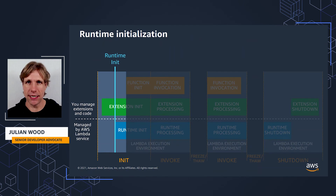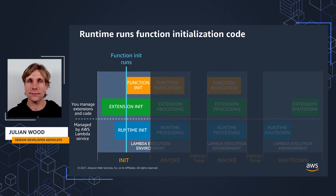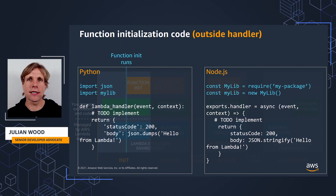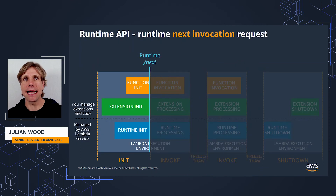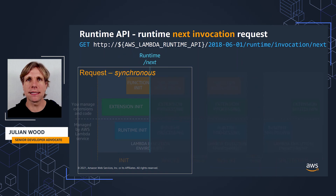The runtime then does its initialization tasks. It reads the environment variables to get details about the function and environment, including the directory and location of the handler, and the AWS_LAMBDA_RUNTIME_API variable, which has the localhost and port of the Runtime API. The runtime then runs the function initialization code — the code outside the handler. This is the function code that runs as part of a cold start, or when provisioned concurrency is enabled. The init code is where you load libraries or set up database connections — the setup your function handler will use when it is itself invoked. The runtime then signals it's finished init by sending its /next API request to the Runtime API, a synchronous blocking call that only receives a response when an invoke or shutdown event comes from Lambda.